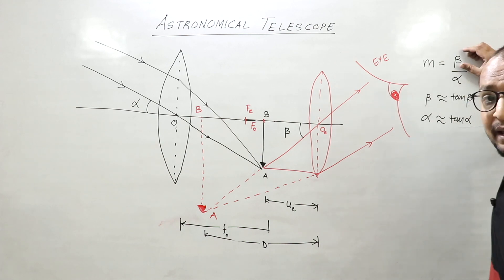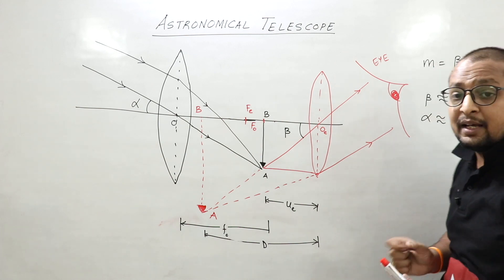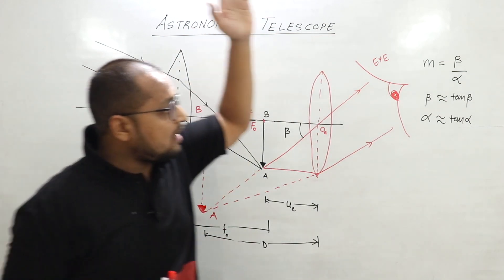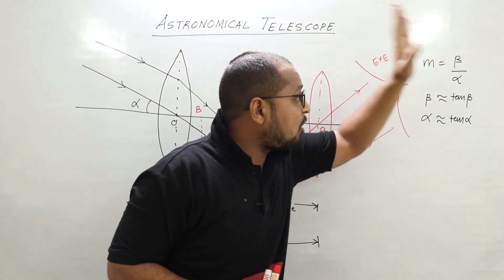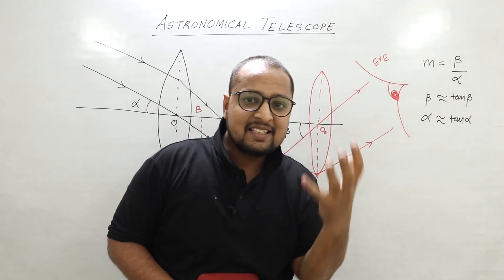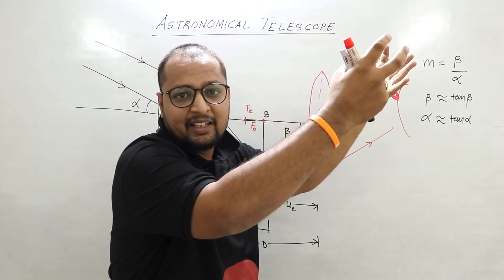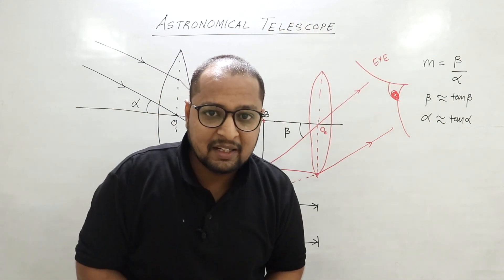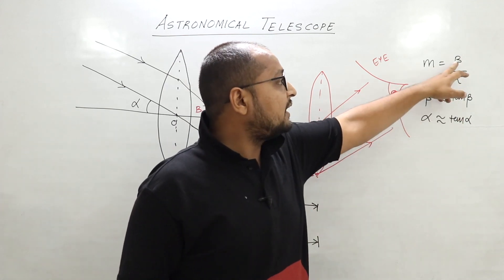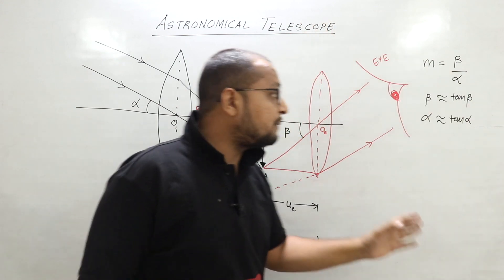Now we are saying that the image is at LDDV (least distance of distinct vision), but the object is at infinity. If my eyes are so close, then what do I need to do with the telescope? I don't need to do that, so the image is at LDDV but the object is at infinity.